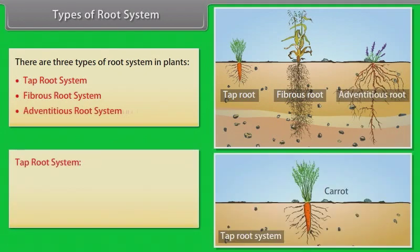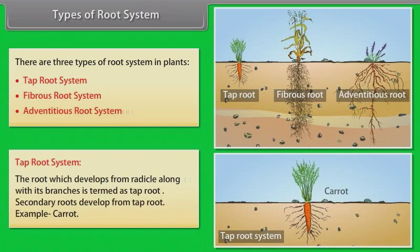Tap root system: The root which develops from the radicle along with its branches is termed as tap root. Secondary roots develop from the tap root. Example: carrot.